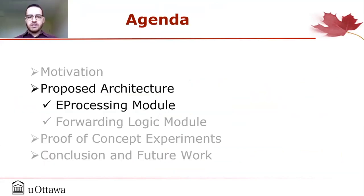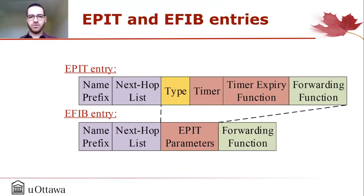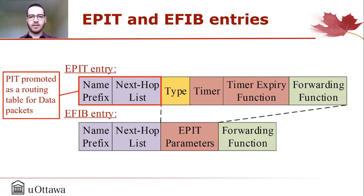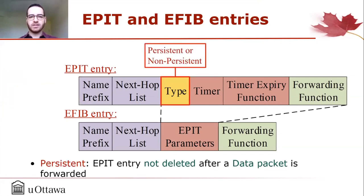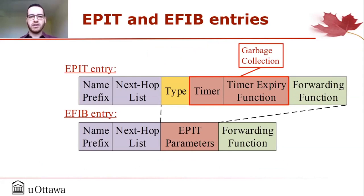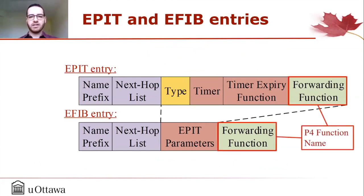The eProcessing module follows the normal NDN forwarding pipeline with modifications to the PIT and FIB tables. The first modification is to promote the PIT as a routing table for data packets, meaning PIT entries no longer necessarily represent a previously forwarded interest but can be created proactively by the control plane. As the control plane can now create PIT entries, some of these entries are persistent — they won't be deleted after a data packet is forwarded through them. Like in NDN, PIT entries have an optional timer used as garbage collection. Both PIT and FIB entries have an additional field containing the name of the P4 function to execute. With these modifications, we call these forwarding tables ePIT and eFIB.